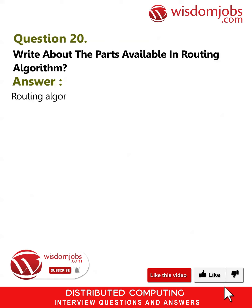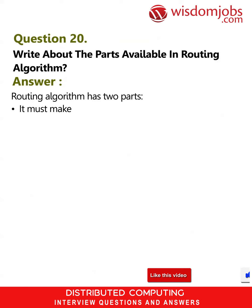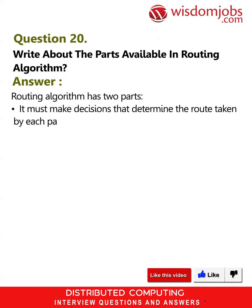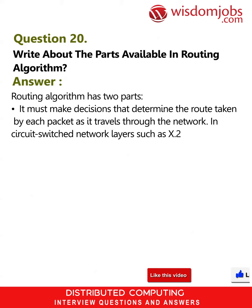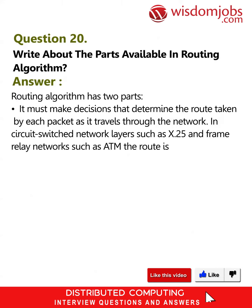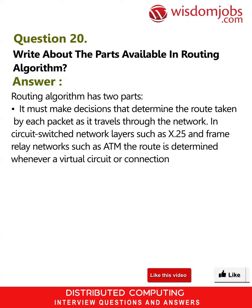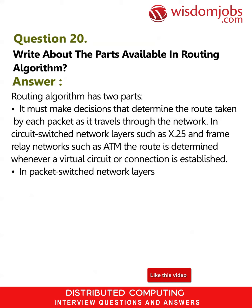Question 20: Write about the parts available in a routing algorithm. Answer: A routing algorithm has two parts. First, it must make decisions that determine the route taken by each packet as it travels through the network. In circuit-switched network layers such as X.25 and frame relay networks such as ATM, the route is determined whenever a virtual circuit or connection is established.